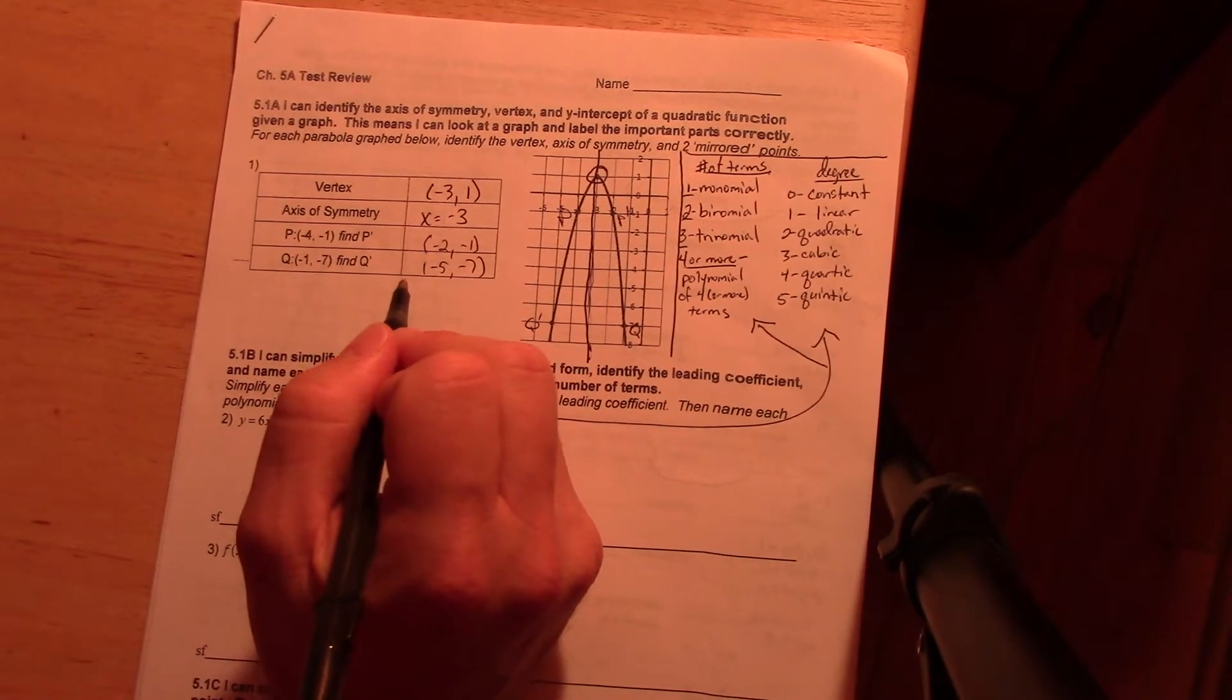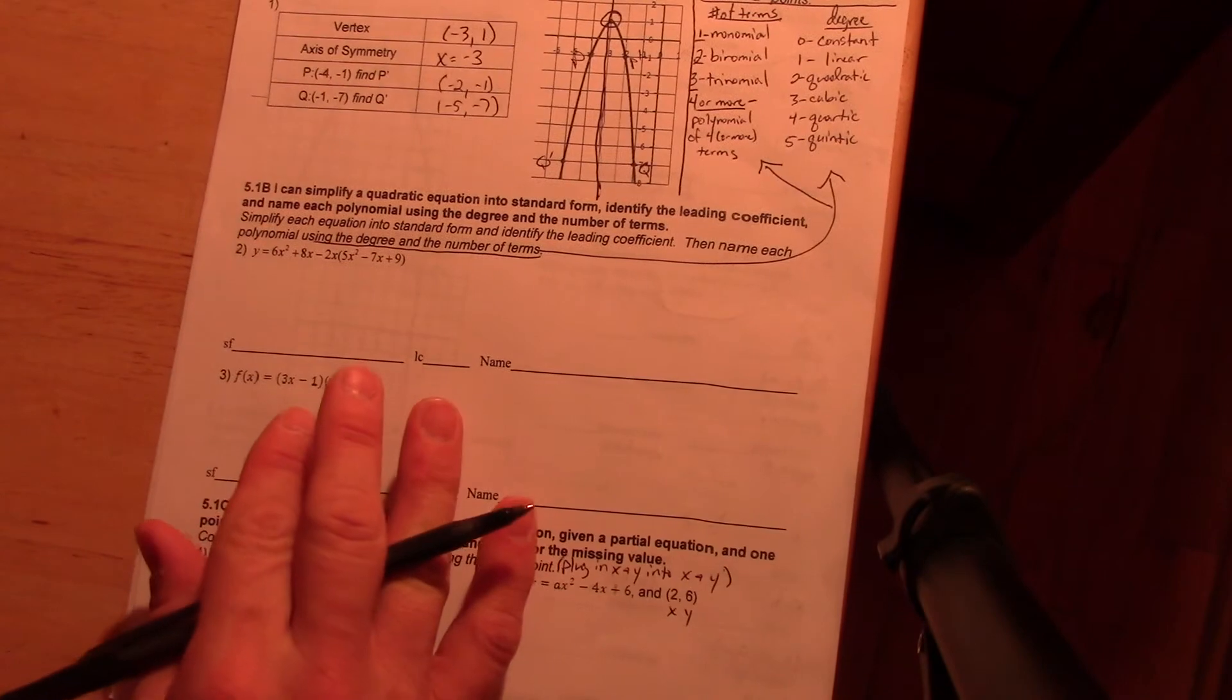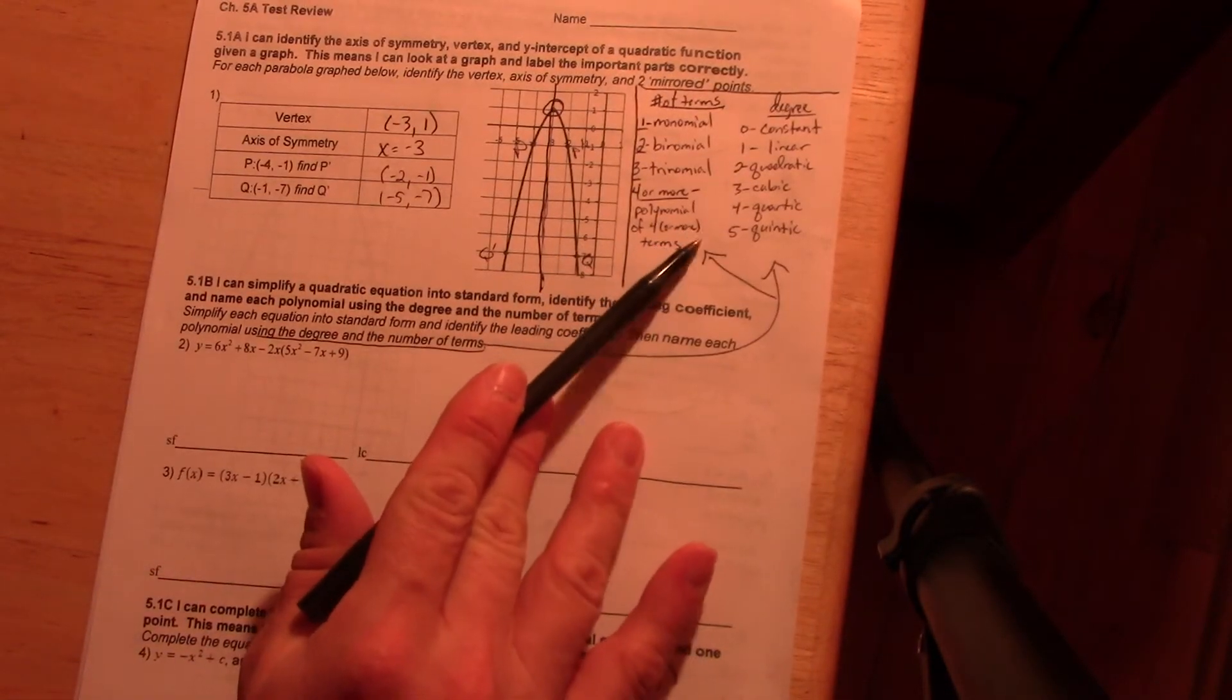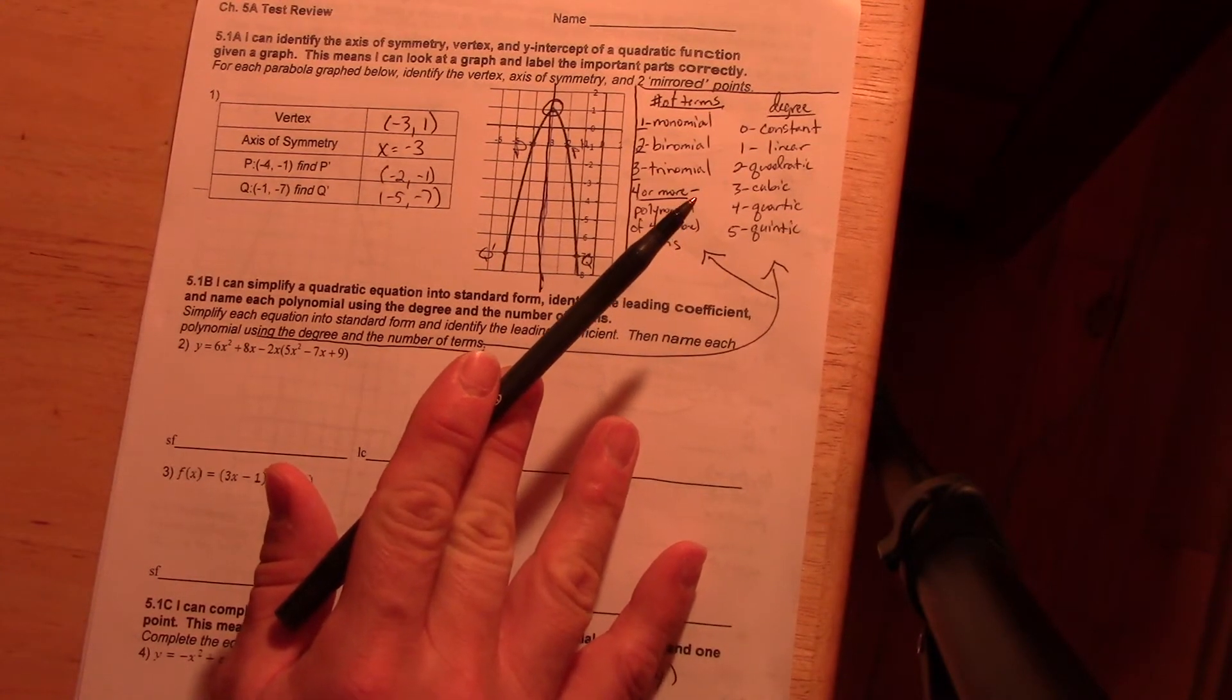Now from there, what I can do is go on to the next problem. Five one B where again, you have to know these terms here, what they are. I am not going to just give those to you. I am telling you, you need to memorize those.